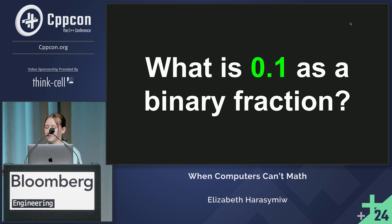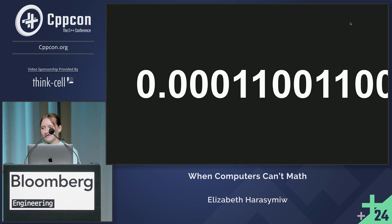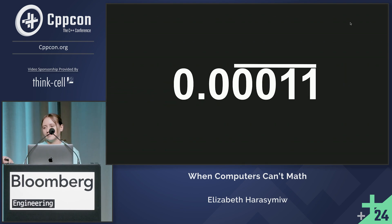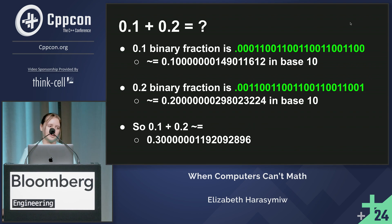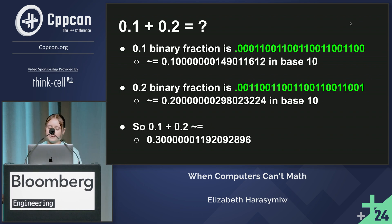So what is point one as a binary fraction? We have the same problem — it repeats. We could mathematically write that, but computers don't have that luxury. With only 23 bits to work with, we have a rounding error. Point one is slightly larger than point one, and similarly for point two. So when we add them together, we get slightly more than point three. Now you know why point one plus point two equals point three zero zero zero zero zero zero zero zero one two.